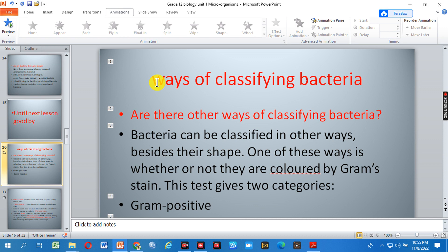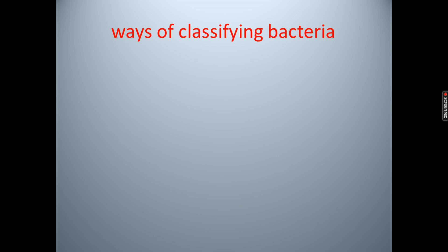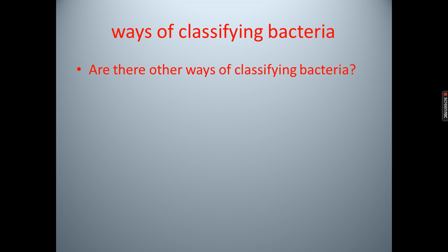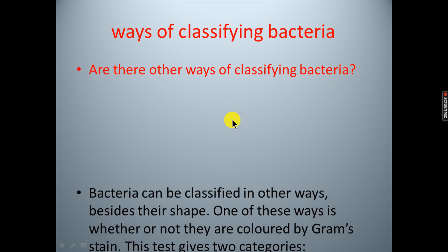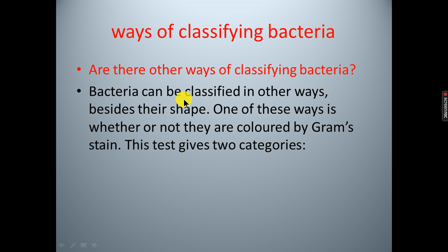Let us start with other ways of classifying bacteria. Bacteria can be classified in other ways besides their shape. One of these ways is whether or not they are collected by gram stain. This test gives two categories: gram positive and gram negative bacteria.